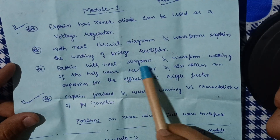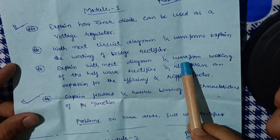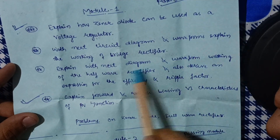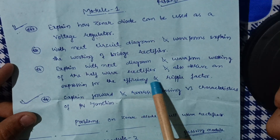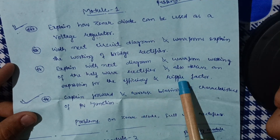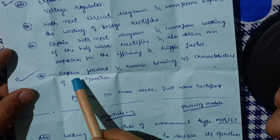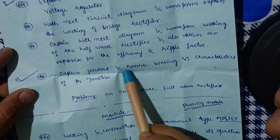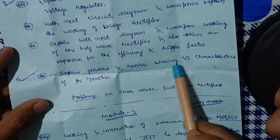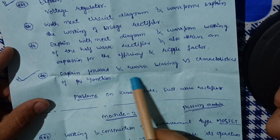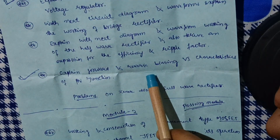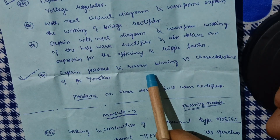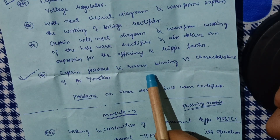Next one is: explain with a neat diagram and waveforms the working of a half wave rectifier, and also derive an expression for the efficiency and ripple factor. And the next important question is: explain forward and reverse biasing VI characteristics of a PN junction. It is also a 12th class concept, so you may already be familiar with these concepts.